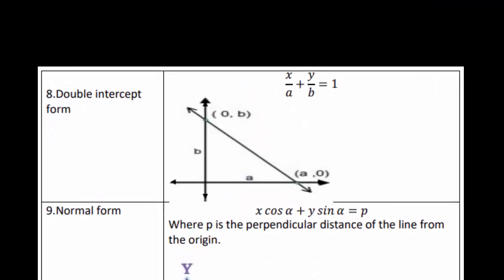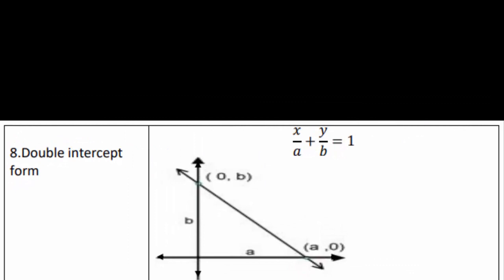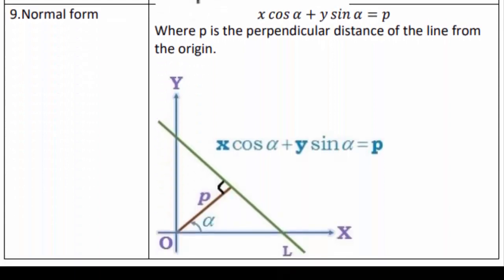The eighth form is the double intercept form, where the known quantities are the x-intercept a and y-intercept b. Its equation is x/a + y/b = 1. The last form is the normal form, where the equation is x*cos(alpha) + y*sin(alpha) = p. Here, p is the perpendicular distance of the line from the origin, and alpha is the inclination of the normal with respect to the positive x-axis.